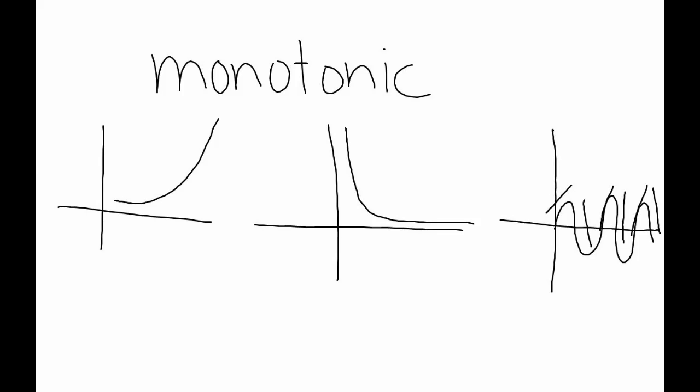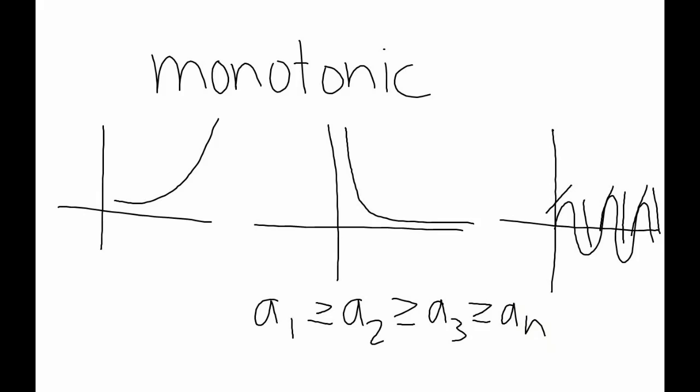The rule for non-increasing is A1 ≥ A2 ≥ A3, and so on. For non-decreasing, the inequality sign is just switched. The greater-than-or-equal-to sign is important because it means a straight line can also be monotonic — according to the definition, a straight line is both non-increasing and non-decreasing, so it is considered monotonic.